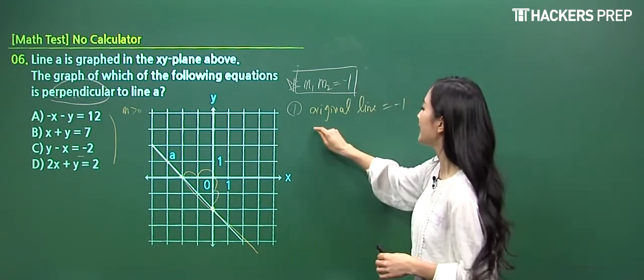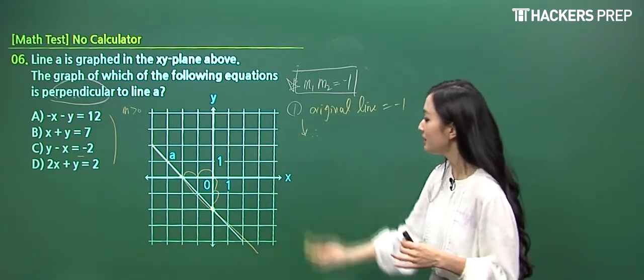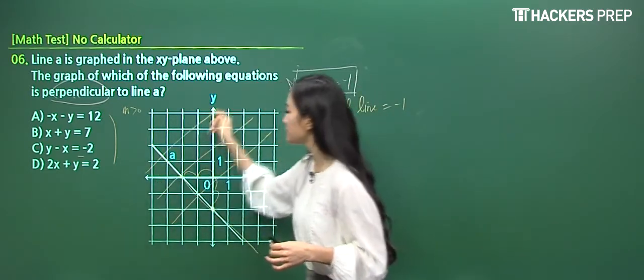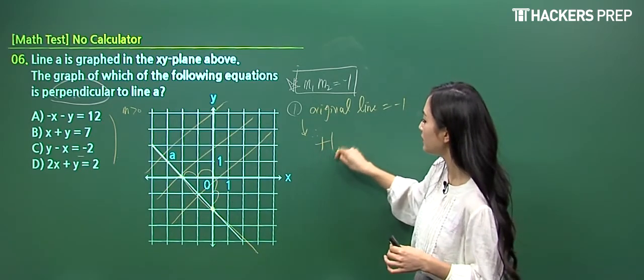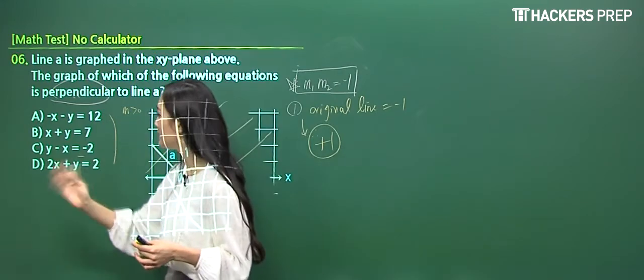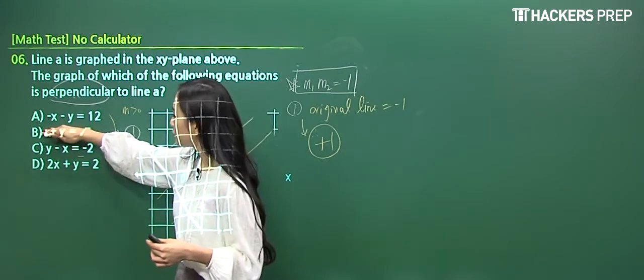Then I can further calculate or conclude that whichever line I'm looking at, the perpendicular line, it doesn't matter where it crosses, must have a slope of positive 1. So let's go through the answer choices and just eliminate whichever does not have a slope of positive 1. So for the first equation,